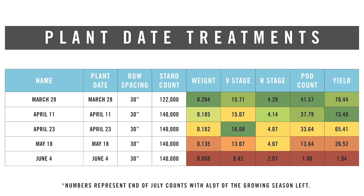By looking at it now, you can see there is a huge difference between the top and the bottom of the plot, which should transfer into final yield. It's going to be hard for that June 4th planting to even come close to catching March 28th. So now that we've talked about plant date, we want to look at how fertility impacts yield as well.